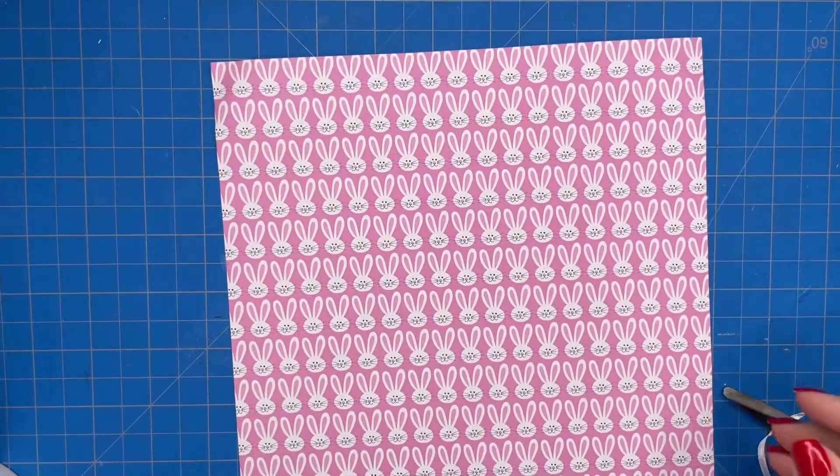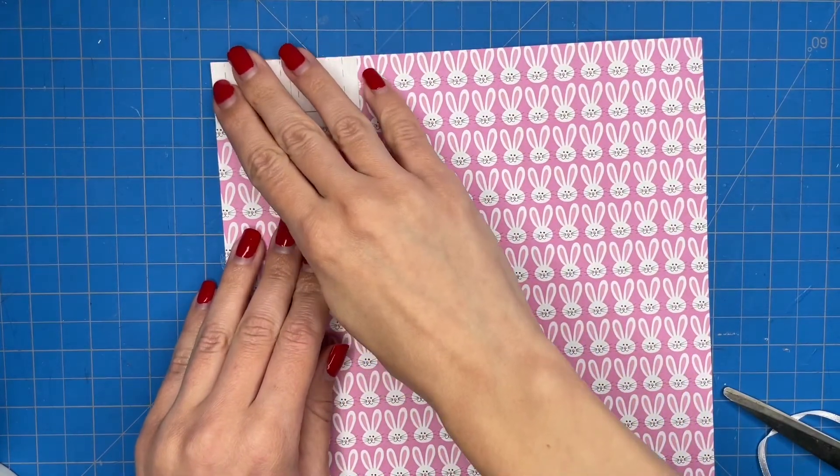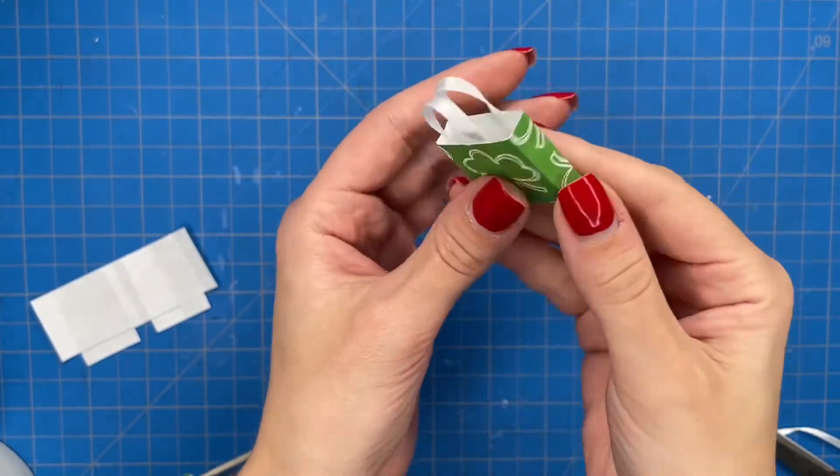And here is some cute bunny paper that I found at Hobby Lobby. So this will make a great gift bag for an Easter miniature. And then here is some St. Patrick's Day paper that I turned into a gift bag.